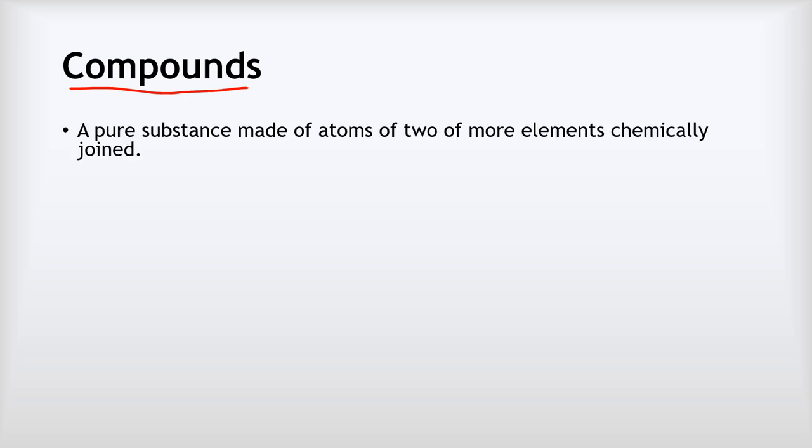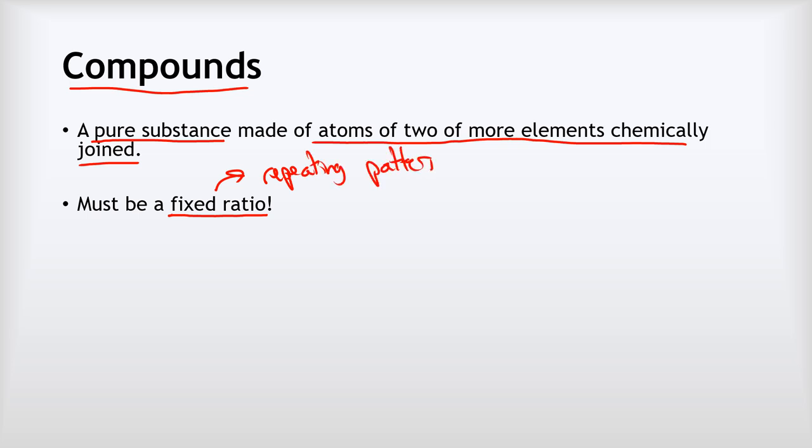Okay, so we've seen what elements are, now it's time to talk about compounds. And this is where chemistry starts to happen when we make compounds. So a compound, again, it's a pure substance, but this time it's made of atoms of two or more elements that have been chemically joined. So if we look at some examples, and so those must be in a fixed ratio. I'll talk more about what that means in a second. But really, we're looking for something like a repeating pattern. That's a way to think about the idea of a fixed ratio.